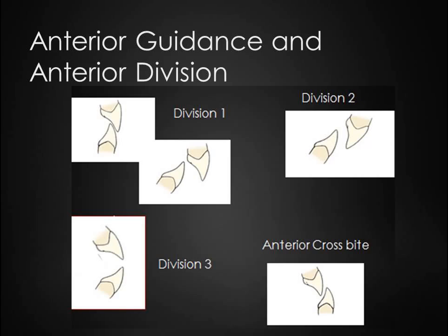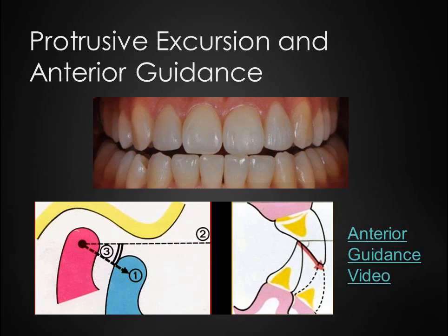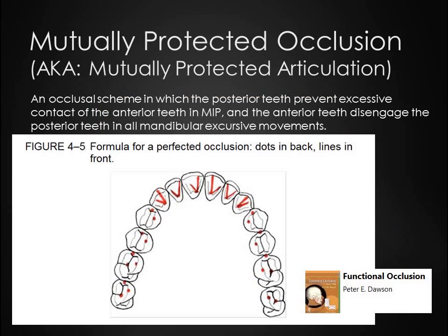Anterior crossbite is mostly seen in skeletal class 3. These images show protrusive excursion and anterior guidance. I have included a video from YouTube that shows anterior guidance and you can find it on Blackboard. The term mutually protected occlusion refers to an occlusal scheme in which the posterior teeth prevent excessive contact of the anterior teeth in MIP and the anterior teeth disengage the posterior teeth in all mandibular excursive movements.